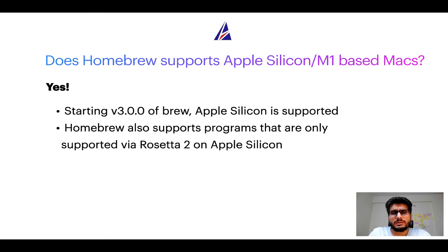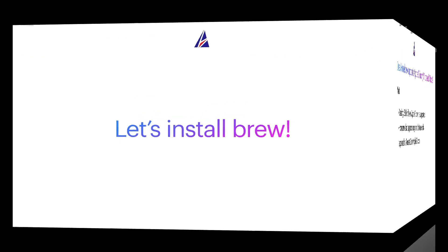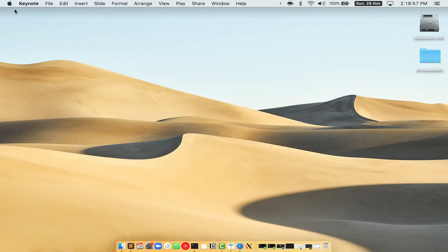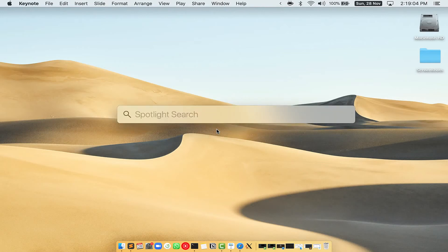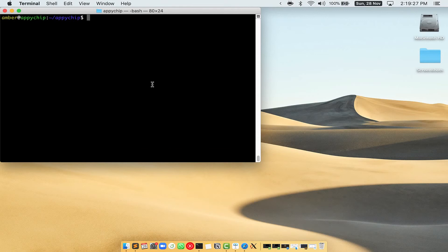Now that I have answered your questions on the safety and compatibility of Homebrew, let's get to the installation process. Before we can install anything using brew, we need to install the package manager itself. Let me open my Mac. First, press Command and Space on your keyboard — this will open Spotlight Search — and then type terminal.app. You will see the Terminal app; simply double-click on it to open Terminal.